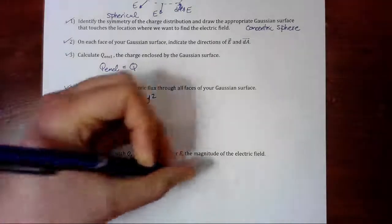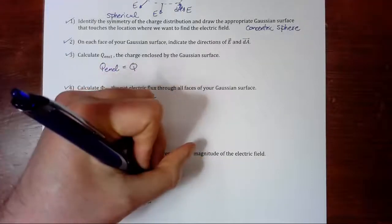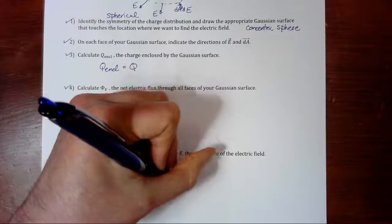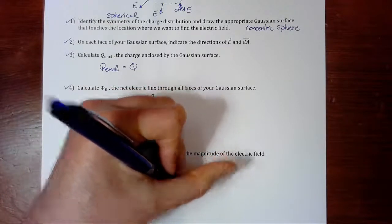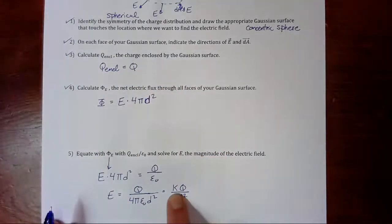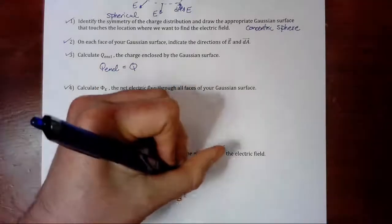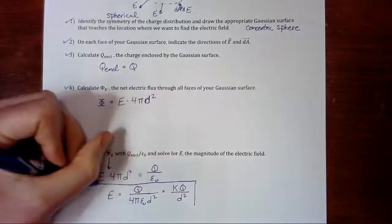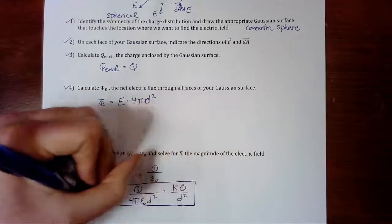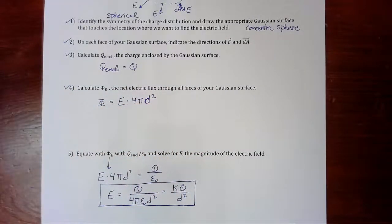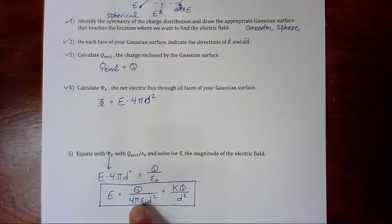Which is the same thing as kq over d squared. Right? Because k is 1 over 4π epsilon naught. And that is exactly what we knew we were going to get. It's our old buddy right there. kq over d squared. And we figured it out using Gauss's law. Hope that makes sense.